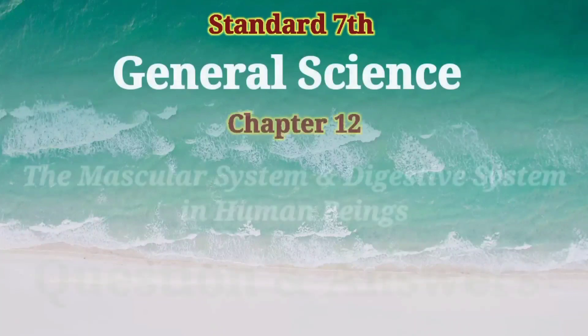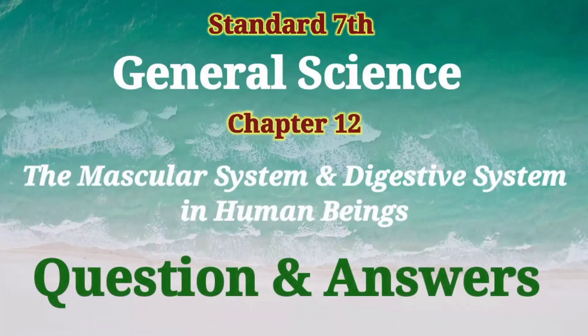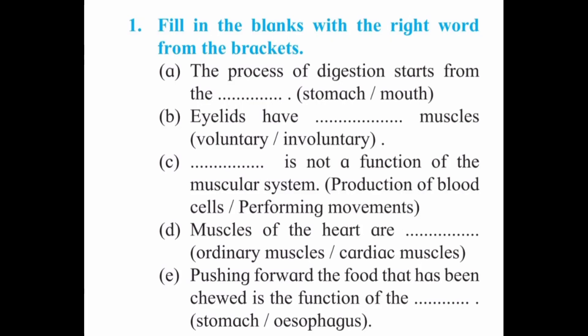Hello students, today we will see question and answer for Standard 7 Science, Chapter number 12: The Muscular System and Digestive System in Human Beings. This is question number one: fill in the blanks with the right word from the brackets.